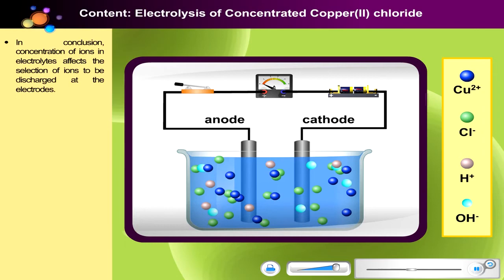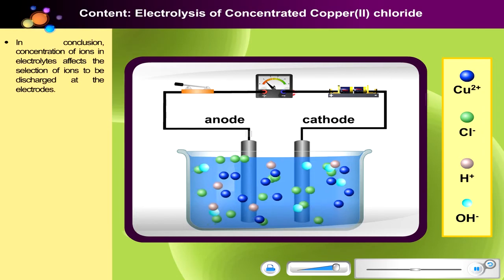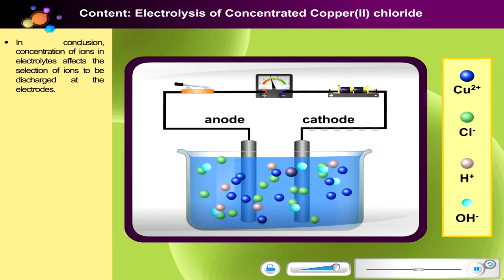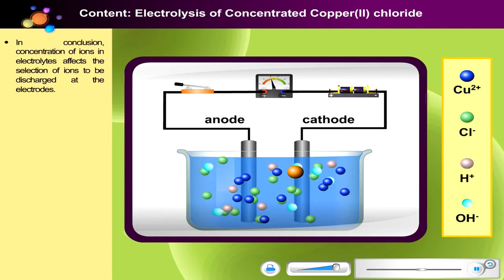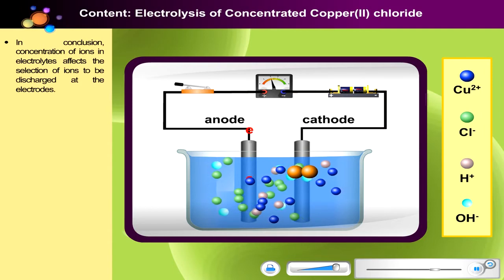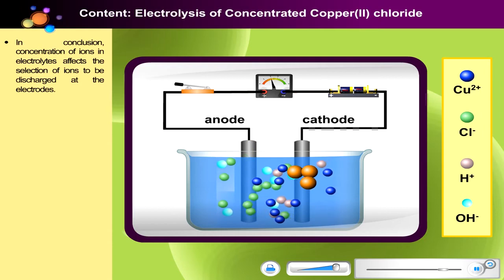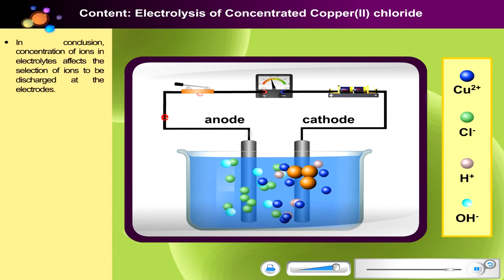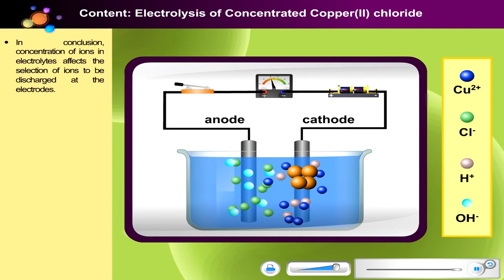From the animation, it is clearly seen that copper ions are selectively discharged at the cathode because there are more copper ions than hydrogen ions. In the same manner, chloride ions are selectively discharged at the anode because there are more chloride ions than hydroxide ions. Thus, in the case where the electrolyte is a concentrated solution, ions to be discharged are not affected by their position in the electrochemical series.